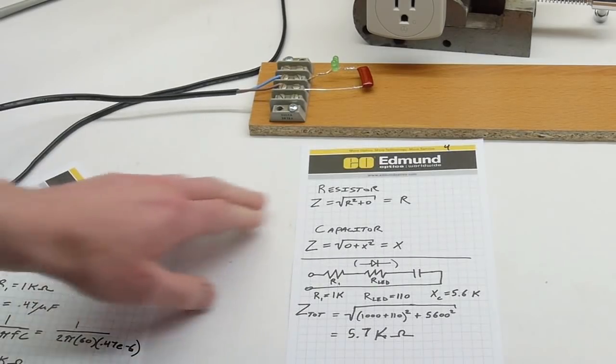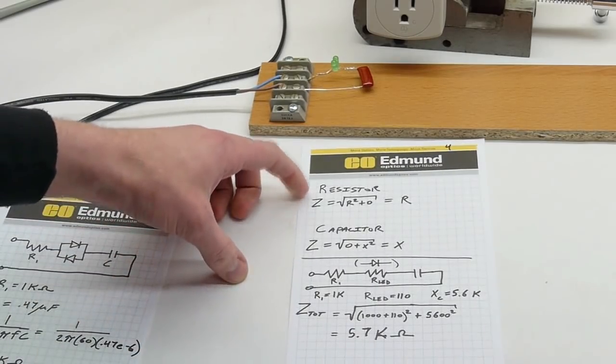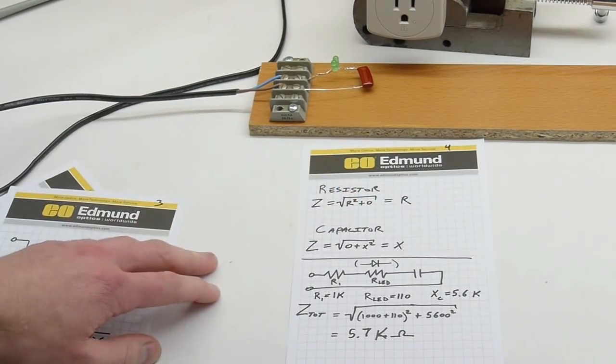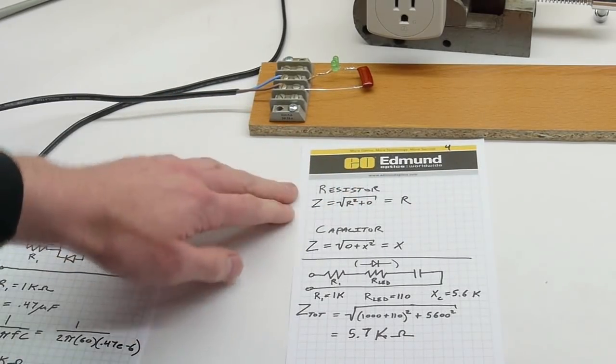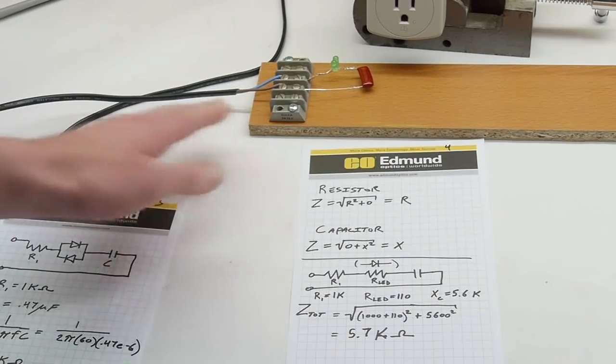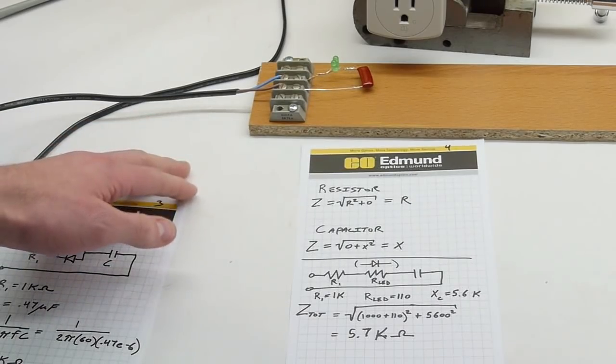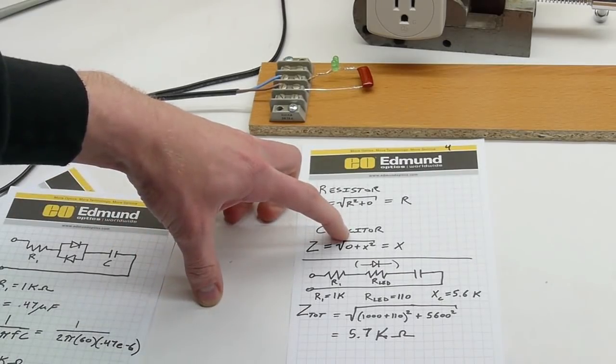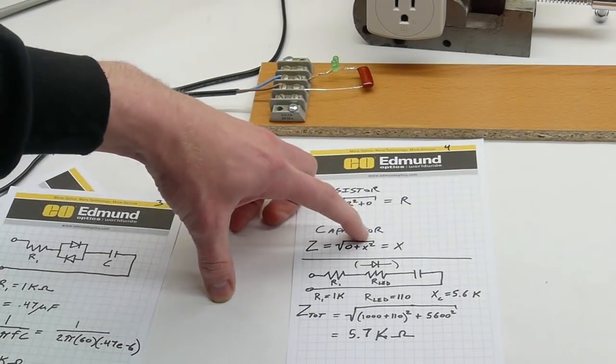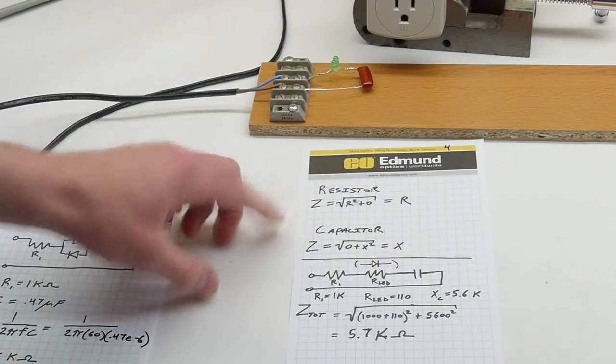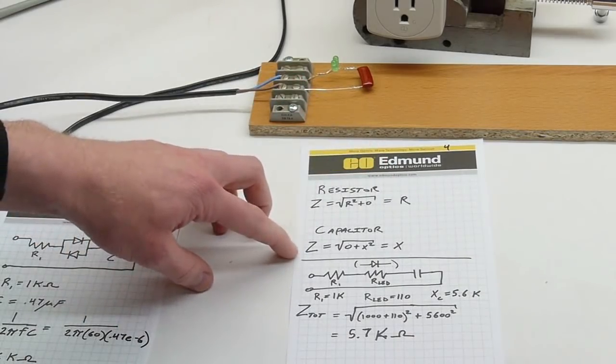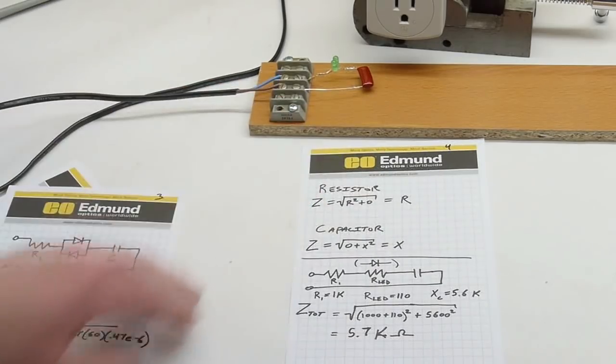Impedance is just the combination of the pure DC resistance and the AC resistance, known as reactance. So the impedance of a resistor, Z equals the square root of R squared plus zero, because a resistor doesn't have any reactance. A resistor has the same resistance at all frequencies if it's perfect. A capacitor has no resistance if it's perfect, and it has reactance.